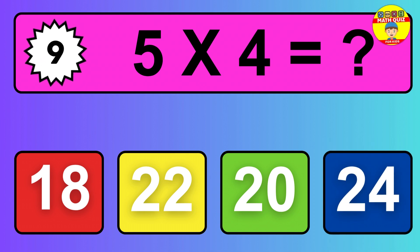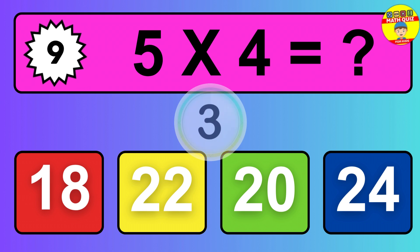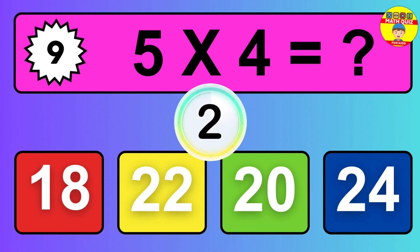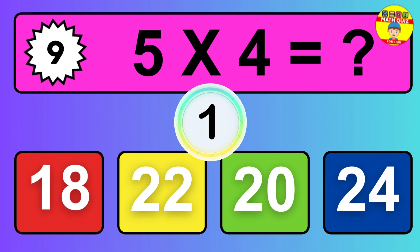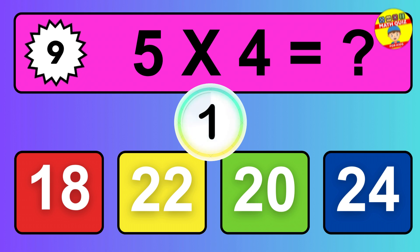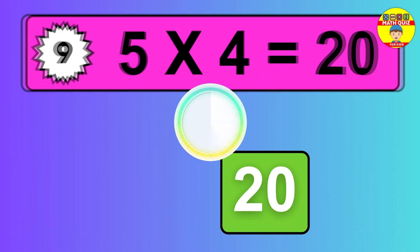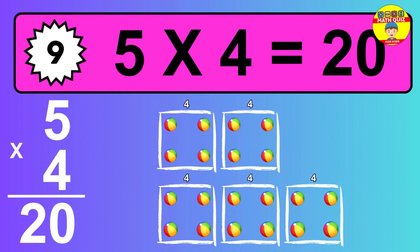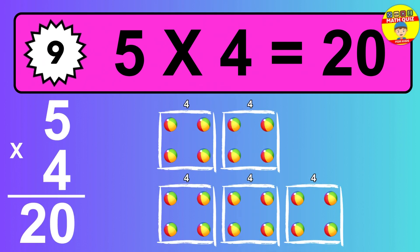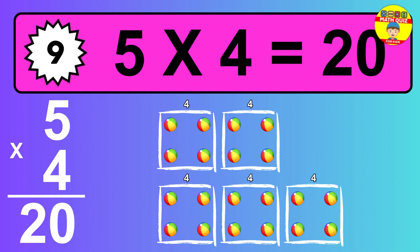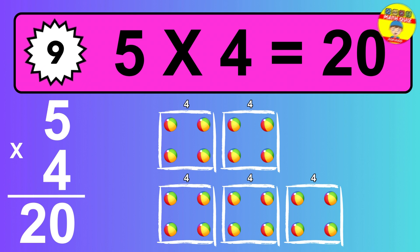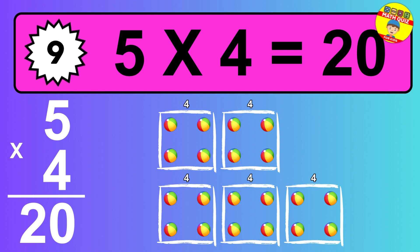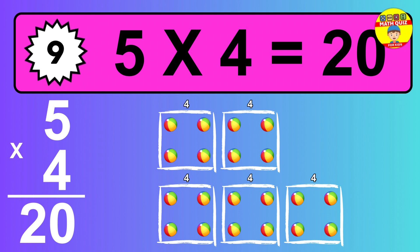Question 9. Five times four equals what? So the answer is five times four is twenty. To calculate, we have five groups with four balls each one. So how many balls do we have? Twenty balls.